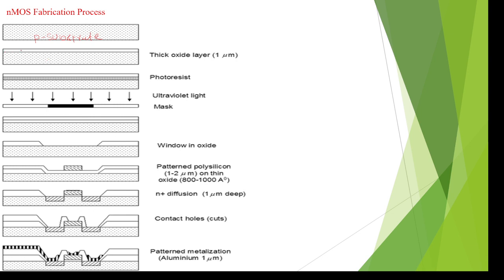In the second step, the total surface is covered with a SiO2 (silicon dioxide) layer. The total surface is deposited with silicon dioxide layer. This process is also called the oxidation process.